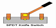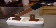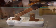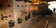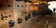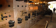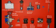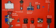Knife switches are great for illustrating the basic principle of how a switch works, but they present distinct safety problems when used in high power electric circuits. The exposed conductors in a knife switch make accidental contact with the circuit a distinct possibility, and any sparking that may occur between the moving blade and the stationary contact is free to ignite any nearby flammable materials. Most modern switch designs have their moving conductors and contact points sealed inside an insulating case in order to mitigate these hazards.